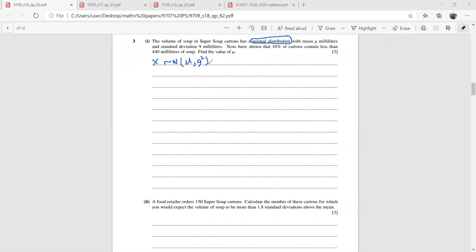It says 10 percent of the cartons contain less than 440 ml, so the probability that X is less than 440, that is equal to 0.1. That is how we have used this 10 percent here. We have to find the value of mu. It's a simple question, we'll directly go into standardizing this.